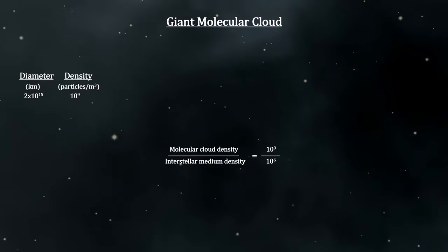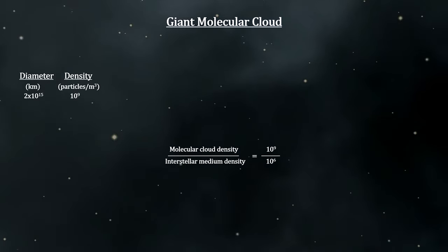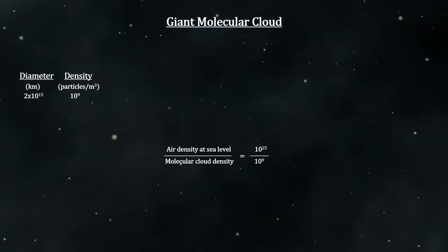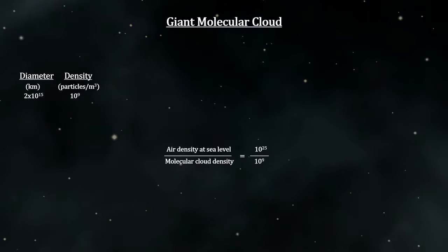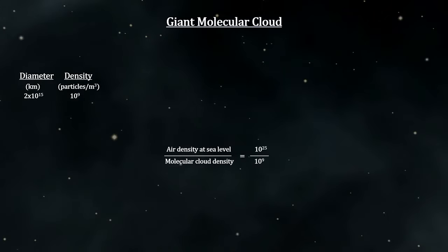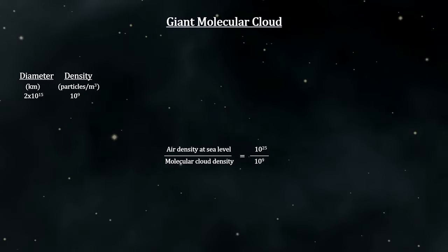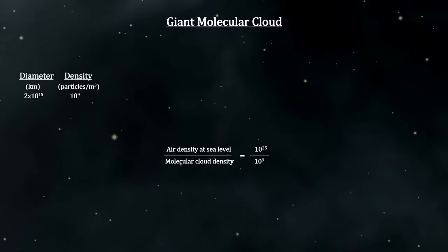The clouds are dense relative to the rest of the gas between the stars, the interstellar medium, but are still much less dense than the atmosphere of a planet. Typical cloud densities are around a billion molecules per cubic meter. That might sound like a lot, but each cubic meter of air at the surface of the Earth has 10,000 trillion times more than that.